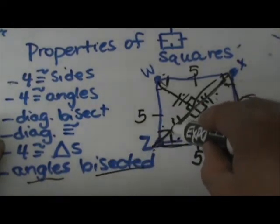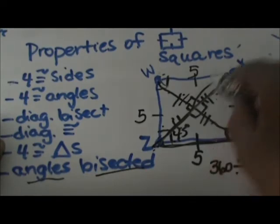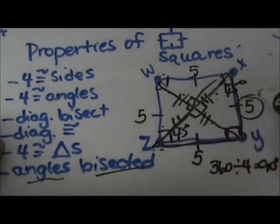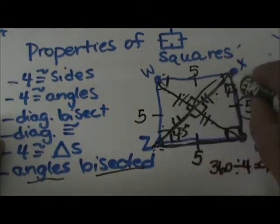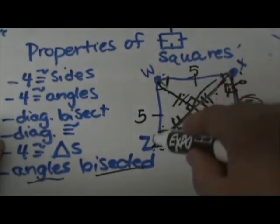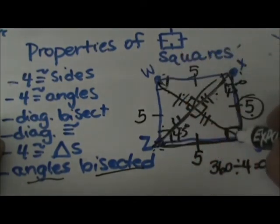So we are taking our right angle and bisecting it into 45s, and we can calculate this diagonal by just multiplying it by the square root of two, because that is the shortcut of a 45-45-90 triangle. So that diagonal is five square root two, and this diagonal would also be five square root two.